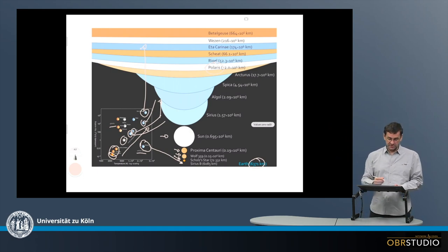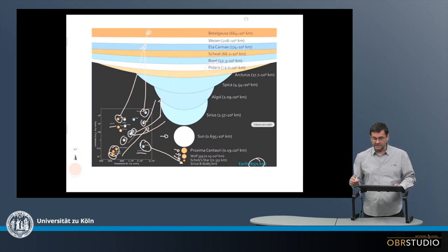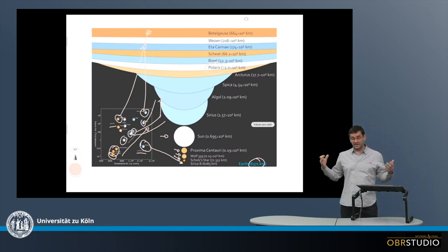One of the largest stars we know, a red giant, is Betelgeuse, which is up here. It has a diameter of more than 1.2 billion kilometers.